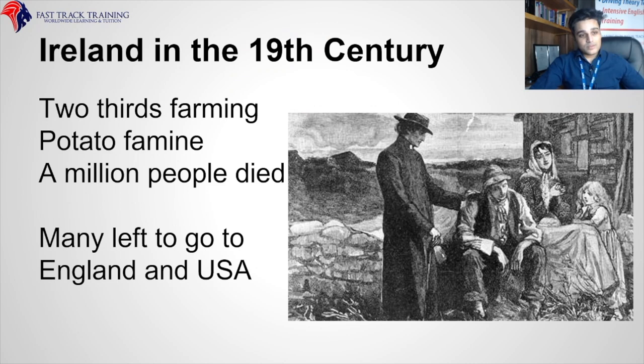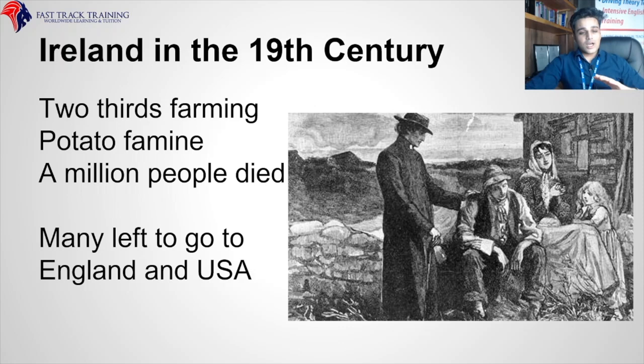The Potato Famine was a really bad event. Two thirds of Irish farming was potato, and in the 19th century a huge famine completely destroyed the potato crops and devastated families. People died and there was no help from the English — they said, essentially, let them die. This is really important in understanding Ireland's history and why Ireland wants to be free and why Scotland wants separation.